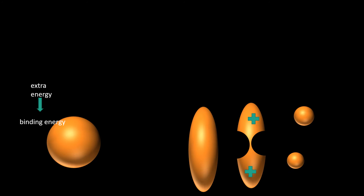Each bell of the dumbbell now has positive charges and repels the other, resulting in fission. The nuclei that result from fission are called fission fragments. Usually fission fragments are unequal in size.